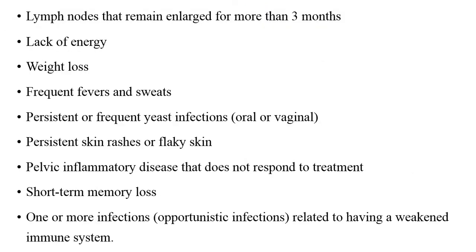Assessing the lymph nodes will show enlargement for more than three months. Other manifestations include lack of energy, weight loss, and frequent fever due to the immunodeficient state. Yeast infections such as oral candidiasis or vaginal infections will be present. Persistent skin rashes may develop. Pelvic inflammatory disease can develop in the girl child, along with short-term memory loss. Opportunistic infections such as pneumonia and tuberculosis may also develop because of the severe immunodeficient state.